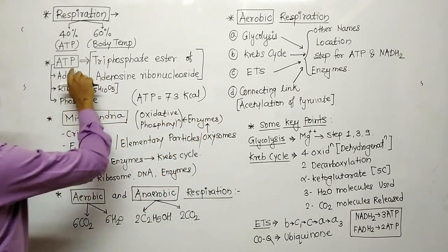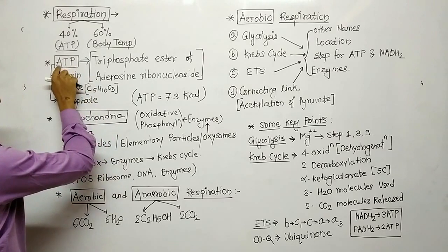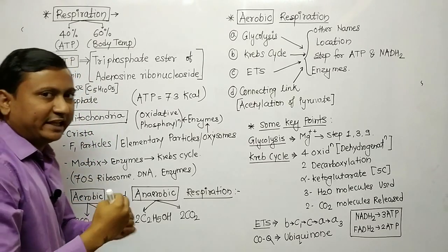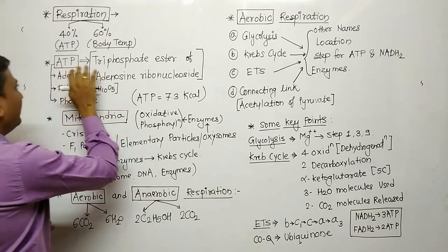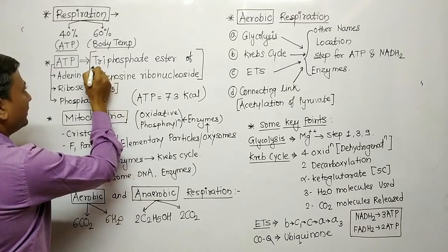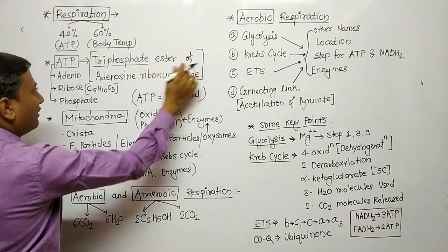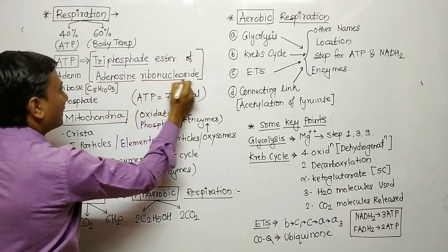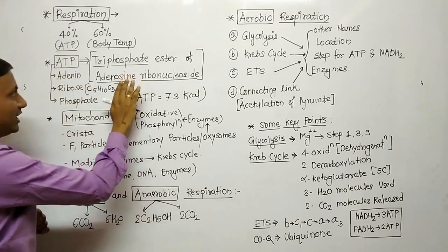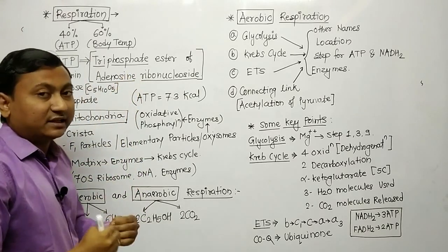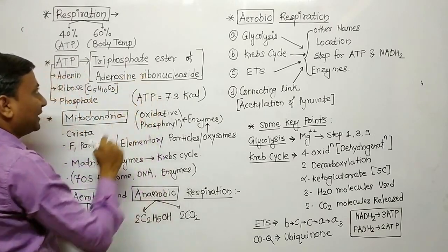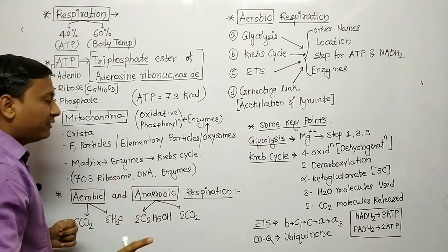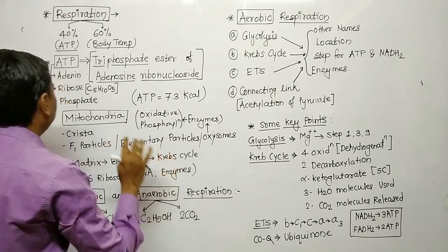The next point is ATP. What is ATP? This is a chemical name that you can expect in the exam. The chemical name of ATP is triphosphate ester of adenosine ribonucleoside. So the chemical name is very important — triphosphate ester of adenosine ribonucleoside.